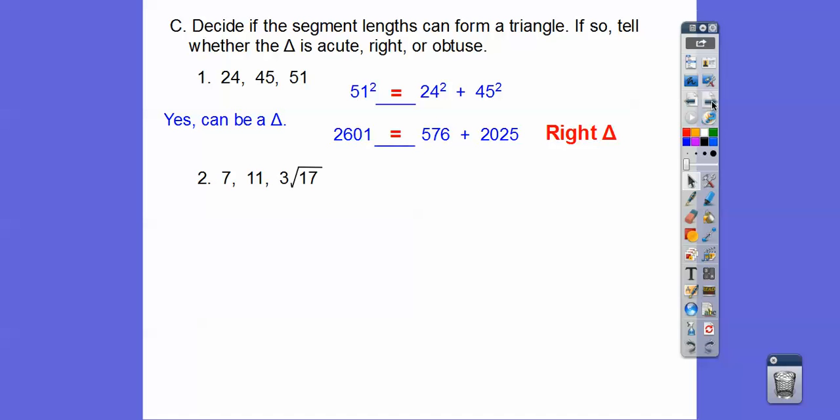All right, how about this one? Okay, so we've got a radical, 3√17. To figure out the decimal, to figure out that this one is the bigger side, square root of 17 is like 4.1, because the square root of 16 is 4, so 3 times 4.1 is going to be a little bit more than 12, so it's about 12.4. And since 7 plus 11 is greater than that, then yes, it can be a triangle, but now we know that this is the bigger side.